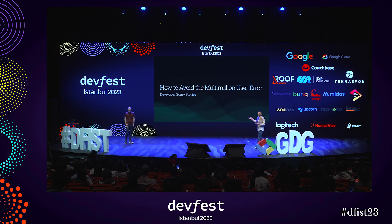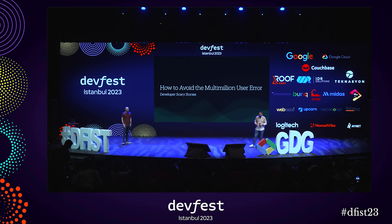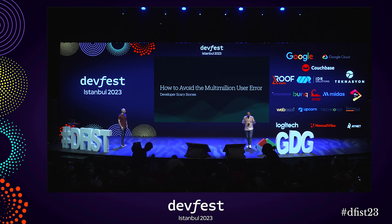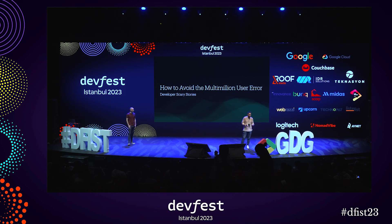We're going to talk about how to avoid the multi-million user error. We're going to talk about some tips and tricks, do's and don'ts on pretty much the everyday life of almost every software engineer right now. We're also going to close up with some scary stories — ways that me and Federico actually managed to screw up, and create some really big problems, and what we learned from that.